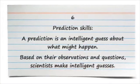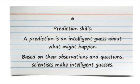Six, prediction skills. A prediction is an intelligent guess about what might happen. Based on their observations and questions, scientists make intelligent guesses.